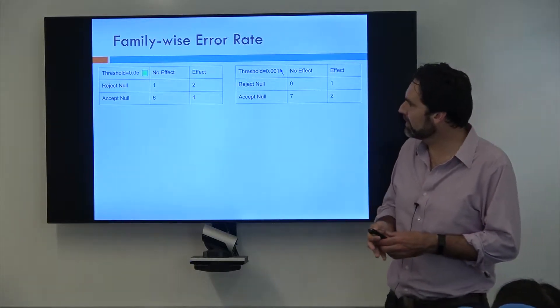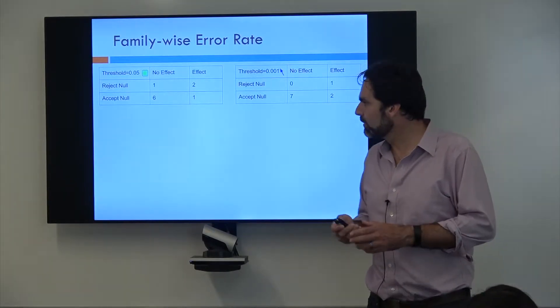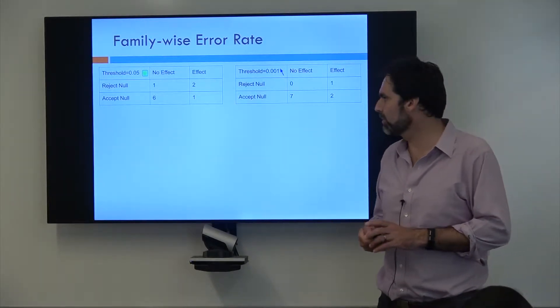However, something that's less complicated to control is called the family-wise error rate. And when we do GWAS in the next module, this is going to become really important.